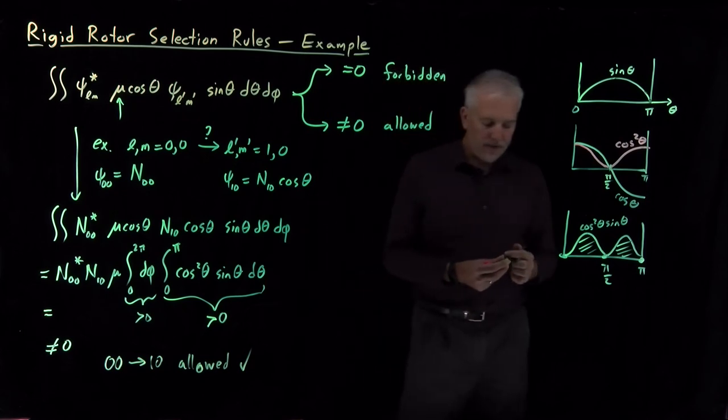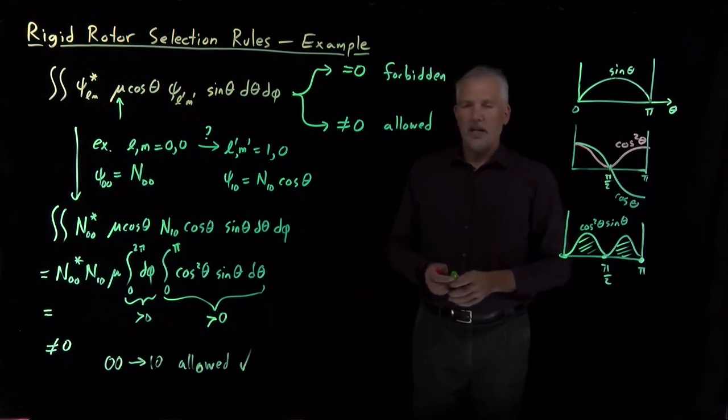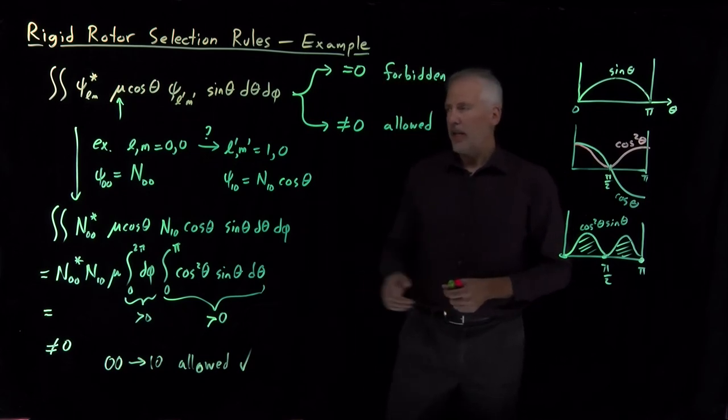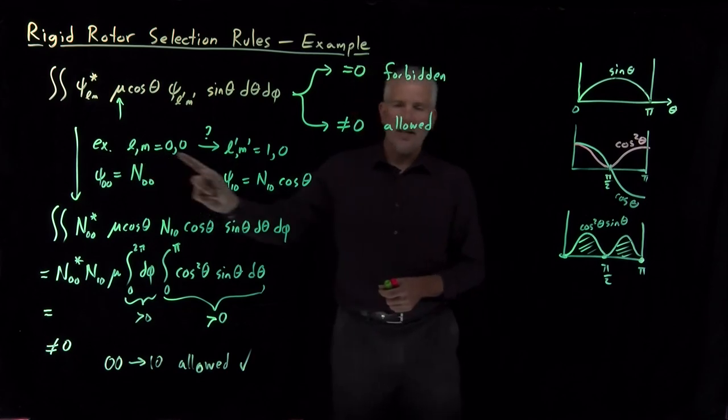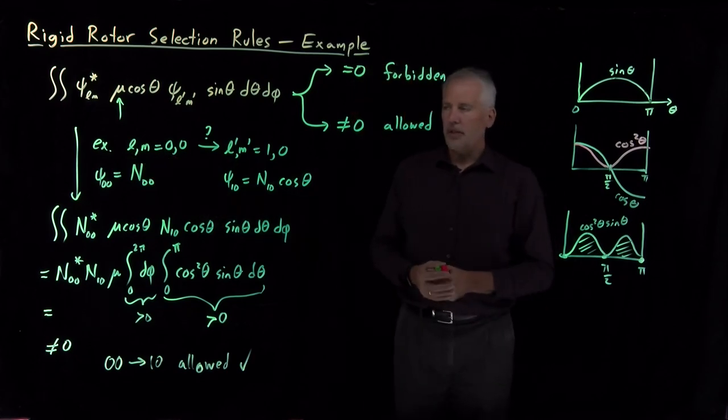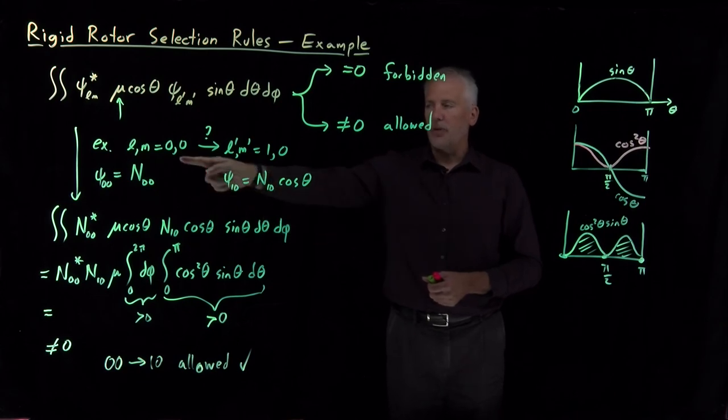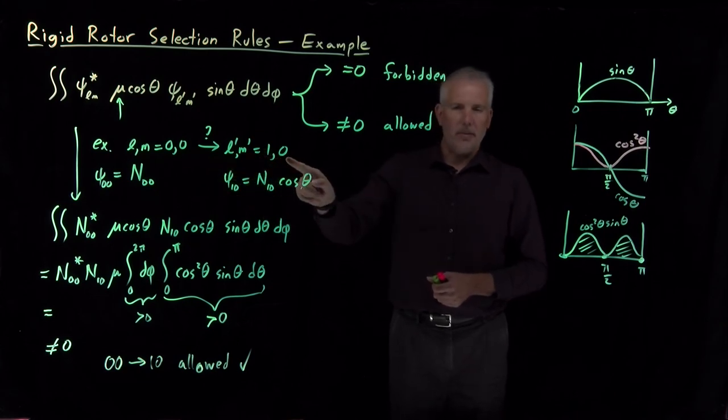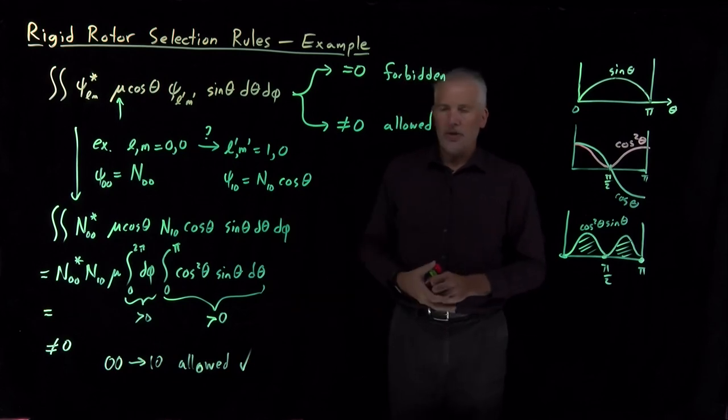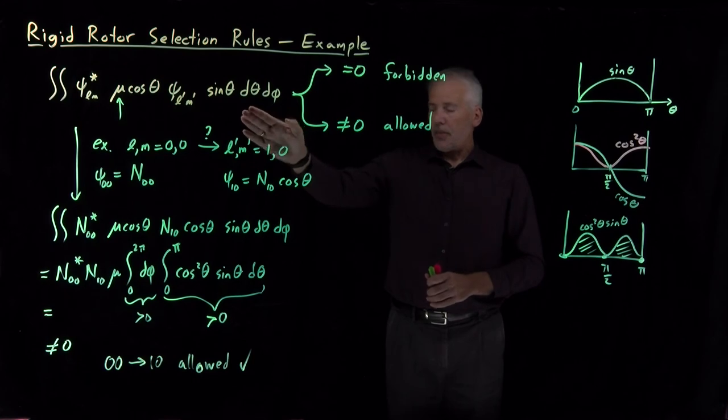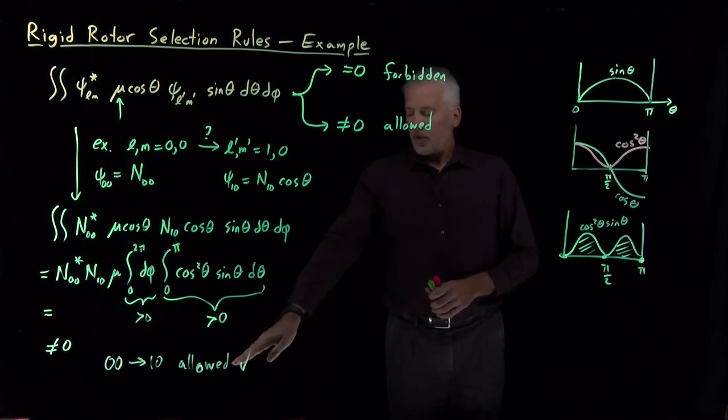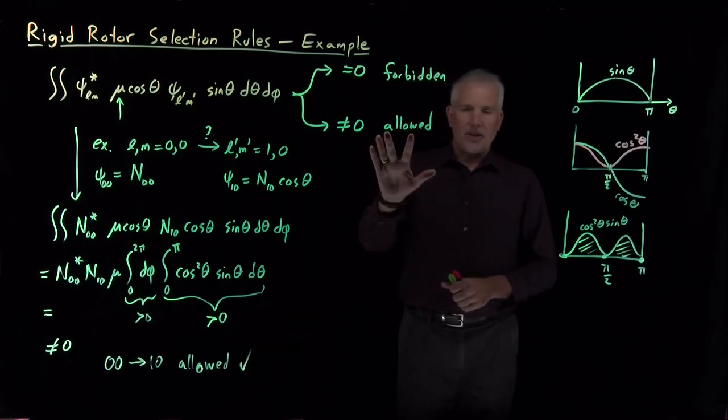If I have a rigid rotor or a diatomic molecule that we're treating as a rigid rotor in the L equals zero, M equals zero state, and I shine the appropriate frequency of light at it, it can absorb a photon of that light to excite up to the L equals one, M equals zero state. So that's an example of how we would determine whether a transition is forbidden or allowed. Transition dipole moment came out to be non-zero, so it's an allowed transition.